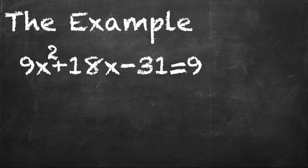Anyway, the example I'm going to be using today is 9x squared plus 18x minus 31 equals 9.